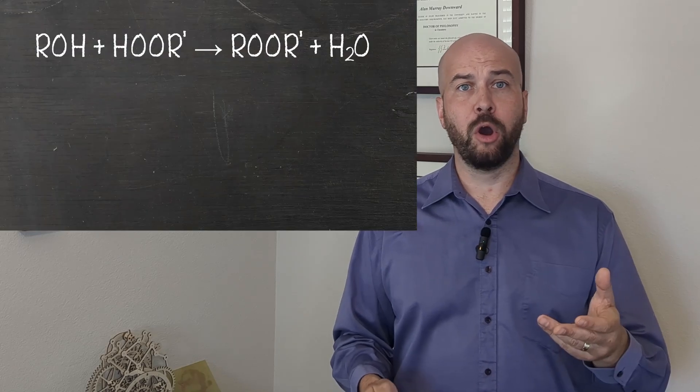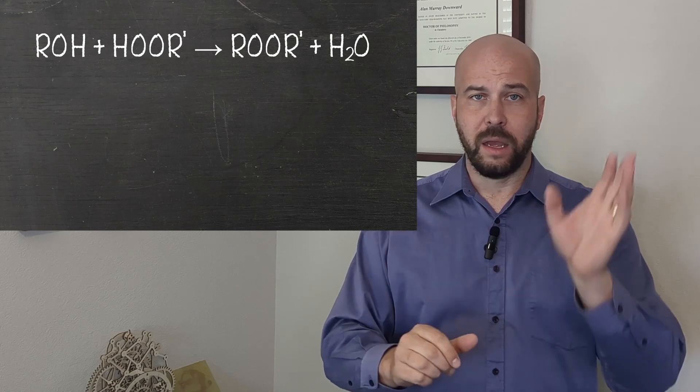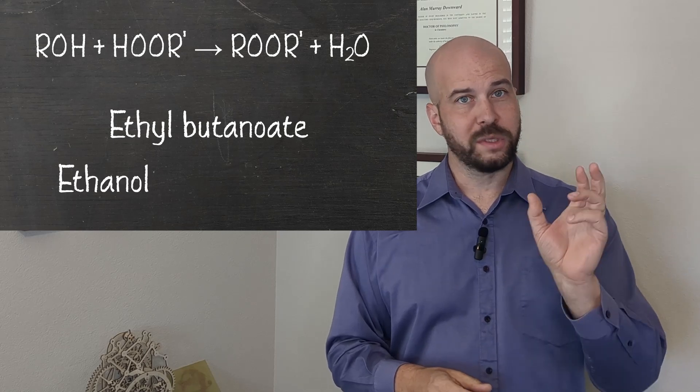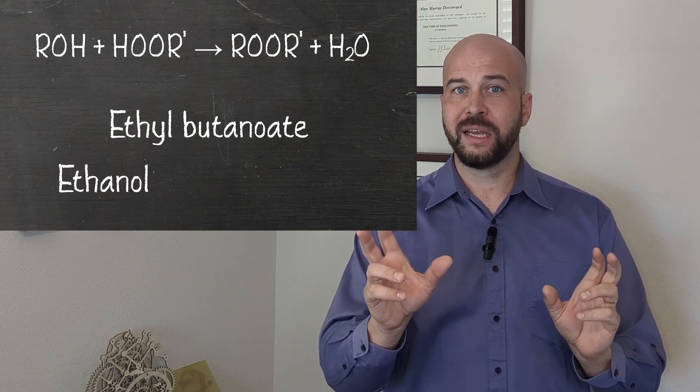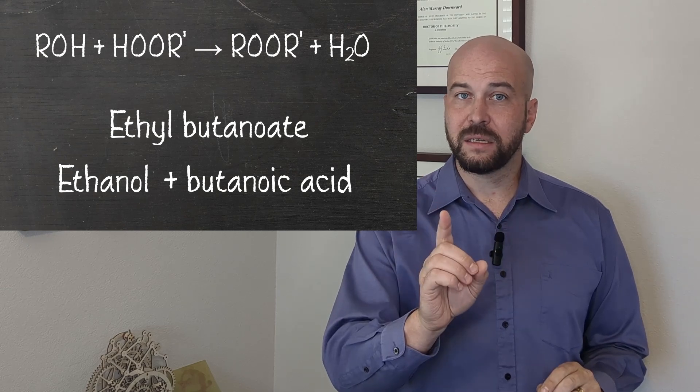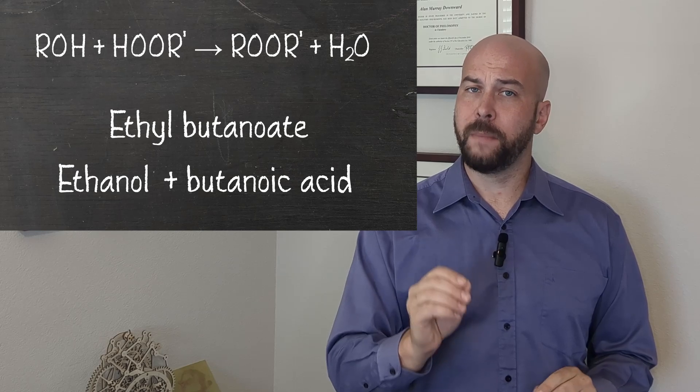It's commercially important because it's used in many different artificial flavorings, particularly in orange juice. The synthesis involved the reaction of an alcohol with a carboxylic acid. Looking at the name ethyl butanoate, we can deduce that the alcohol was ethanol and the carboxylic acid was butanoic acid. That is what made this lab particularly memorable.